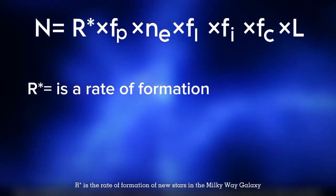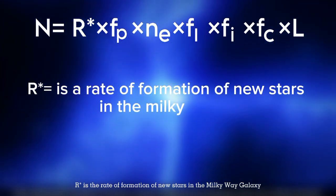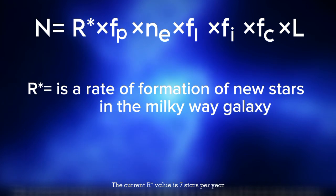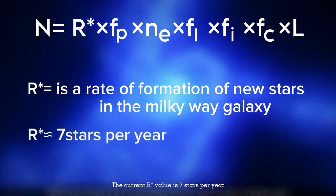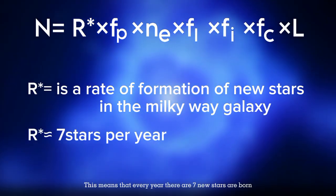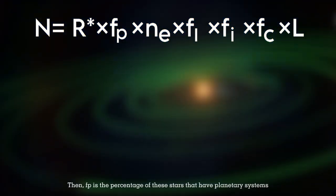R star is the rate of formation of new stars in the Milky Way galaxy. The current R star value is 7 stars per year. This means that every year there are 7 new stars are born.